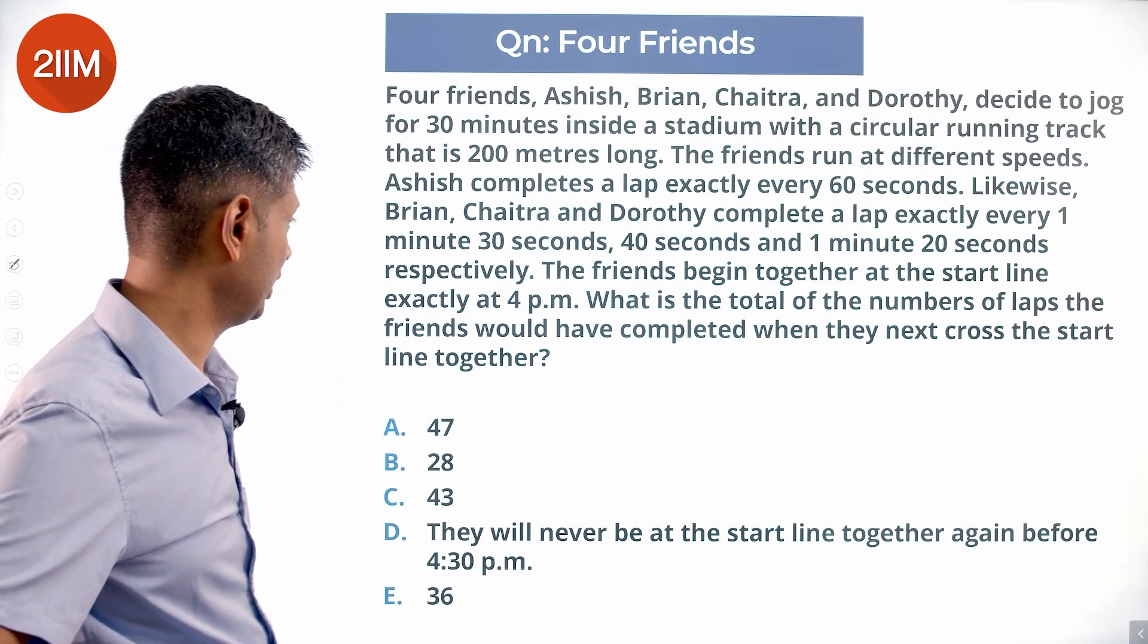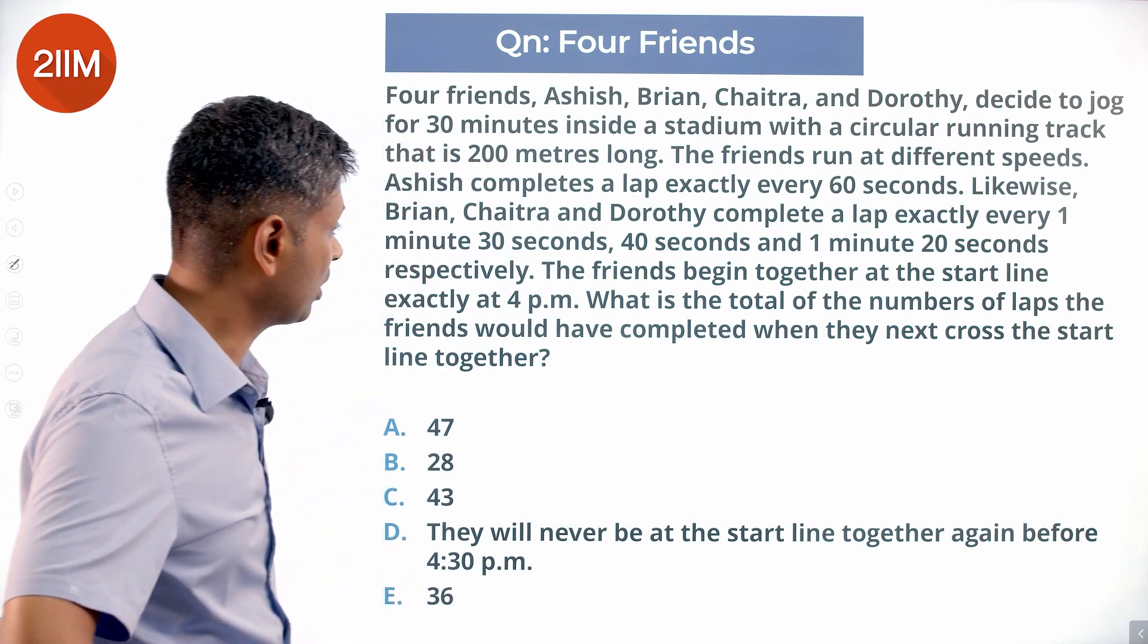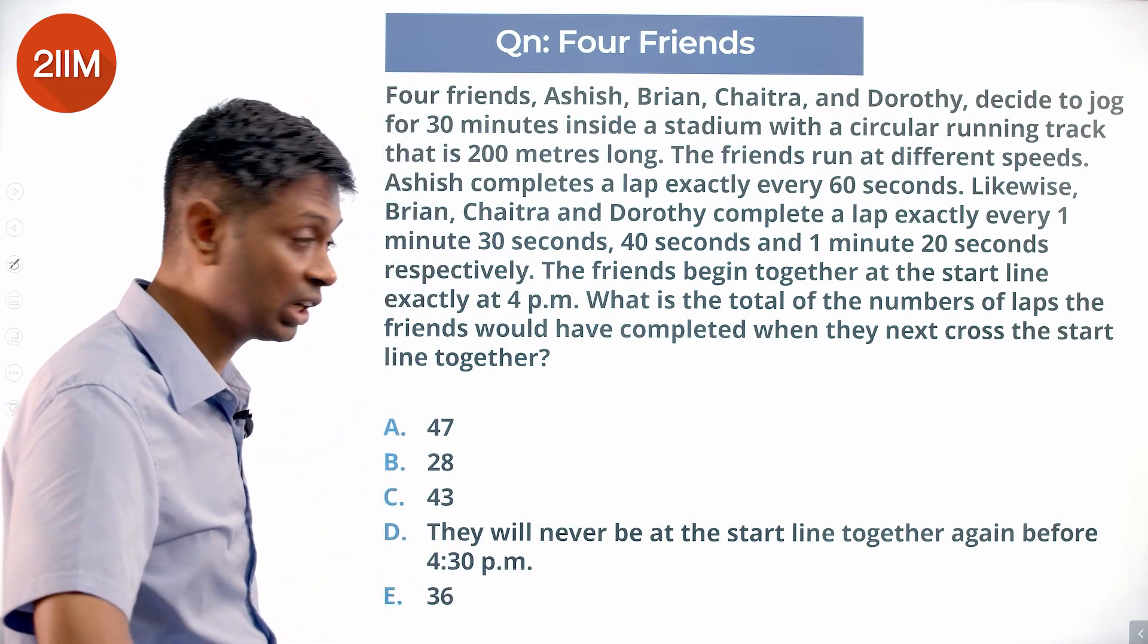The friends begin together at the start line exactly at 4 p.m. What is the total number of laps the friends would have completed when they next cross the start line together?